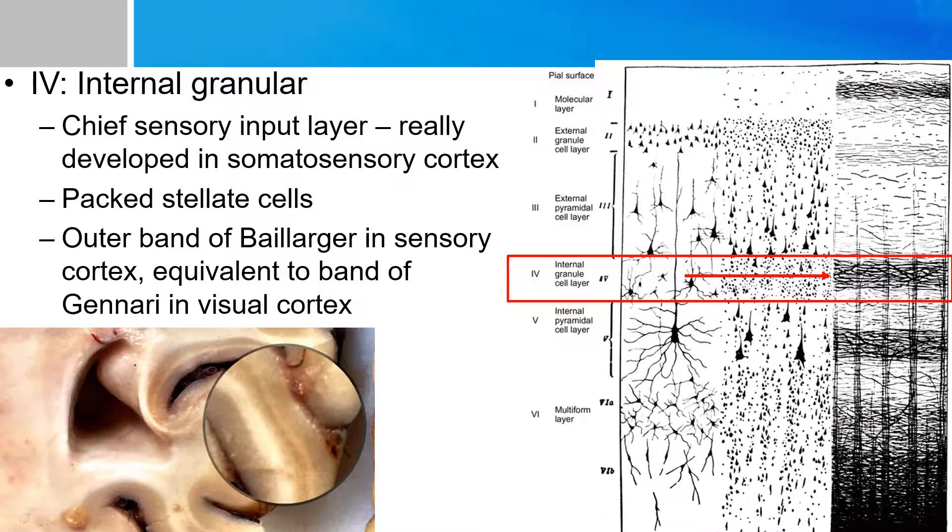The outer band of Baillarger is contiguous throughout the gray matter and is especially prominent in another sensory cortex, which is the visual cortex. This band in the visual cortex is referred to as the band of Gennari. And this band is visible to the naked eye during the brain cutting after a dense plexus of myelinated axons is after this is myelin stained. And this is illustrated in the picture in the bottom left and highlighted by the blue arrow.